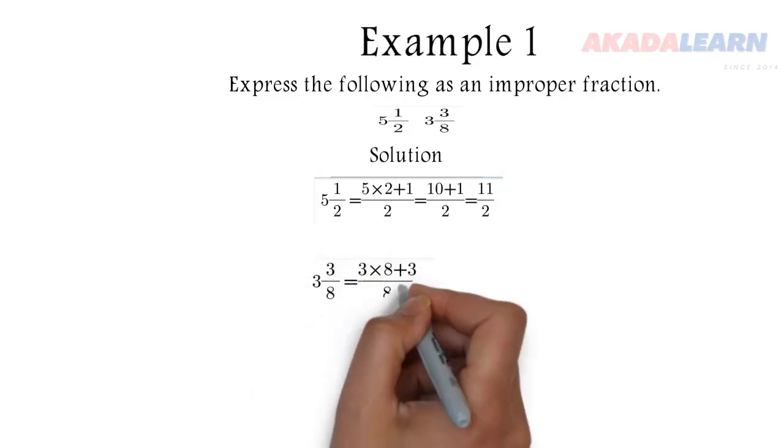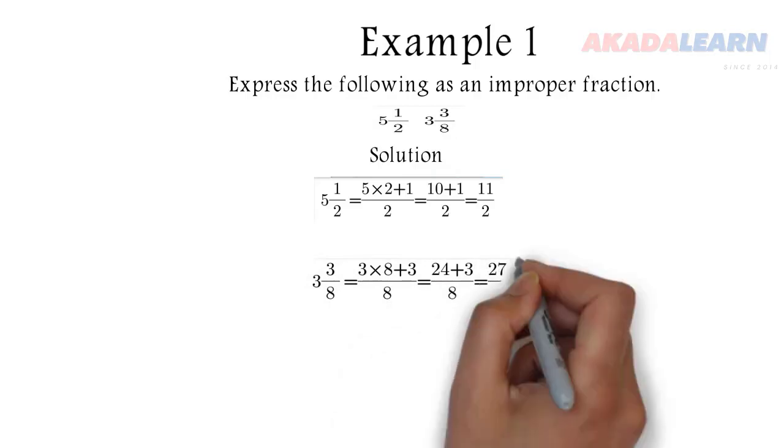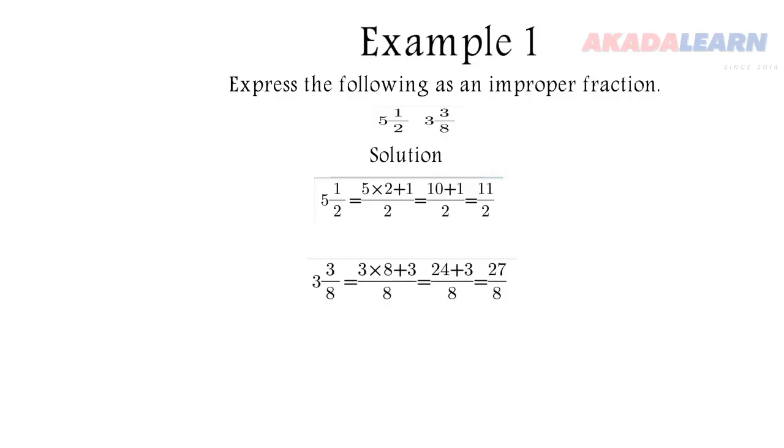Also, three whole number, three over eight. We'll say three times eight plus three over eight. Three times eight is 24. We add three to that, we add eight and we'll get our answer. Simple and short.